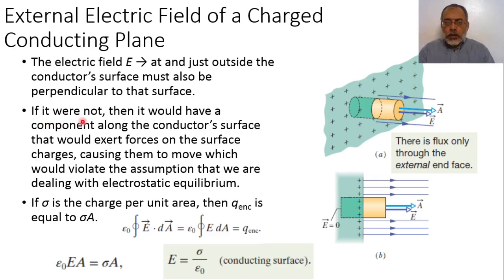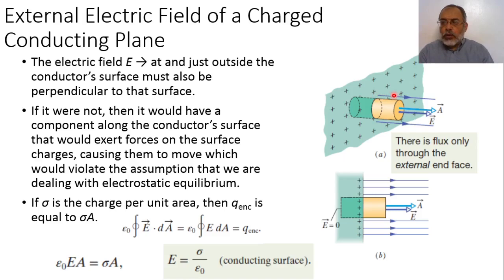If we have reached equilibrium such that charges are distributed uniformly along the surface of the conductor, then all charges are stationary. This means there is no tangential electric field along the surface — in other words, the electric field from the conductor surface is always normal to the surface of the conductor.